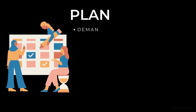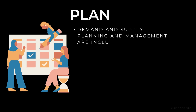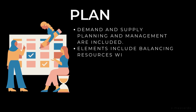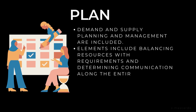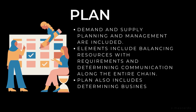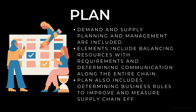The first framework process in supply chain is Plan. In supply chain, the demand and supply planning and management are included in this first step. The elements include balancing resources with requirements and determining communication along the entire chain. The plan also includes determining business rules to improve and measure supply chain efficiency.